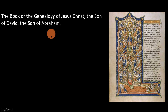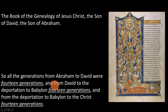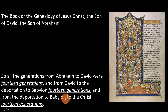What follows next is the genealogy, and Matthew concludes his genealogy with the following statement: 'So all the generations from Abraham to David were 14 generations, and from David to the deportation to Babylon, 14 generations, and from the deportation to Babylon to the Christ, 14 generations.'